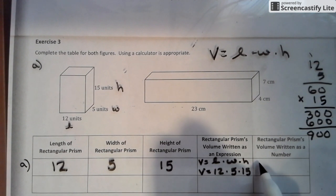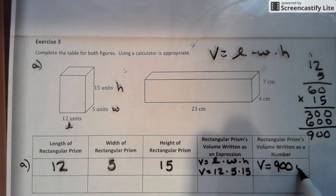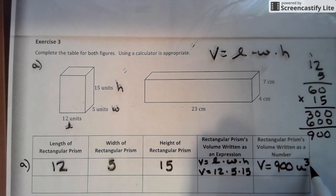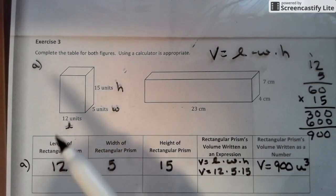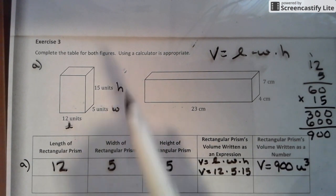Our volume equals 900 units cubed. Remember, the little 3 is needed because we are in a three-dimensional shape. Not to mention we're using three sets of numbers: length times width times height.